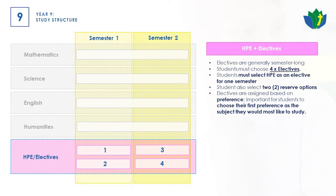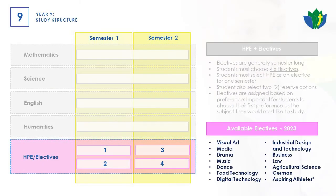Students will also be asked to choose their HPE and electives. They must list HPE as one of their electives — they can either do HPE or Aspire. If they choose Aspire, it will run over semester one and semester two, counting as a year-long subject. There are also other electives they can choose, including Visual Art, Media, Drama, Dance, Business, Law, and a whole range of other subjects, and these are all semester-based.